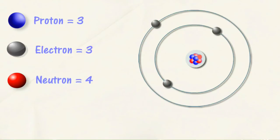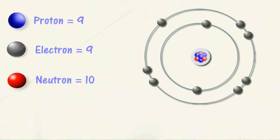Lithium has 3 protons and 3 electrons. Fluorine has 9 protons and 9 electrons in a neutral atom.